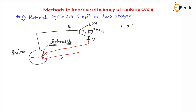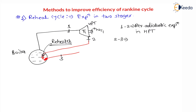Let us write down the processes. Process 1 to 2 is reversible adiabatic expansion in the high pressure turbine. Process 2 to 3 is constant pressure heat supply in the reheater. The reheater is a heat exchanger and a heat exchanger is a constant pressure process. So 2 to 3 is constant pressure heat supply in the reheater.